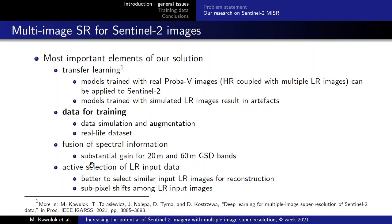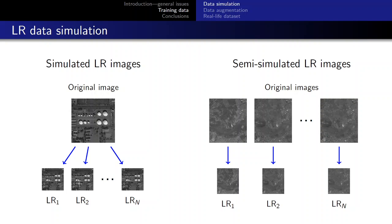We also worked on active selection of low-resolution input data presented to reconstruction, and we found that it is better to select similar input low-resolution images for reconstruction, provided that there are some sub-pixel shifts among the presented input images. The standard procedure for preparing simulated data is that every low-resolution image is obtained from the same original high-resolution image. We proposed a semi-simulated scenario in which every low-resolution image is obtained from a different original image, and these original images present the same area, the same region of Earth.